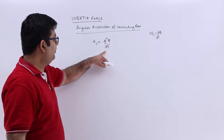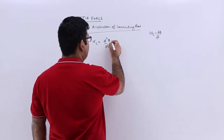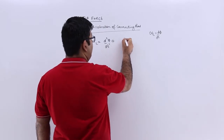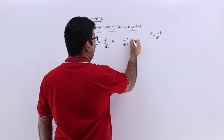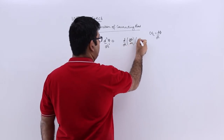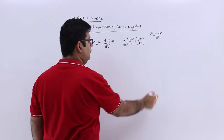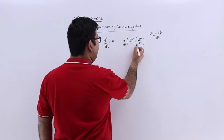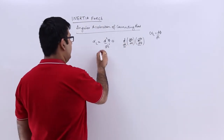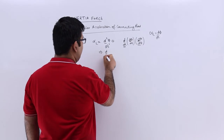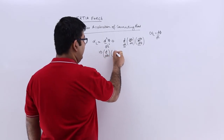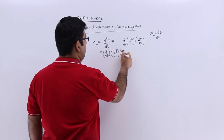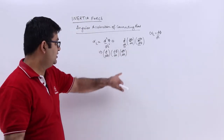Let's manipulate this a bit. I will divide and multiply by d(theta). You will have d/dt of d(phi)/dt, and I will multiply and divide by d(theta). Combining terms, it becomes d/d(theta) of d(phi)/dt, multiplied by d(theta)/dt. This d(theta)/dt is omega.